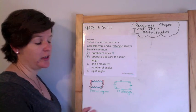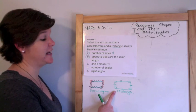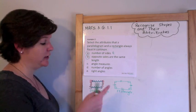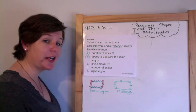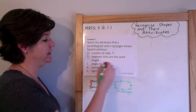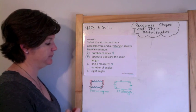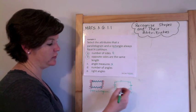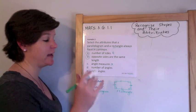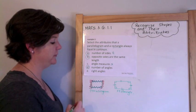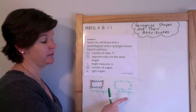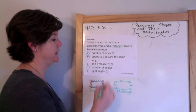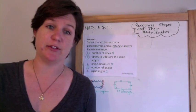The angle measures. A rectangle always has 90 degree square angles, 90 degree angles, or right angles. A parallelogram could, but it doesn't have to always have it, so this one is not correct. Number of angles, they have four angles each. They're not the same angles, but the number of angles are four. And right angles. A rectangle always has to have right angles, but a parallelogram does not. So A, B, and D would be your answers for this one.